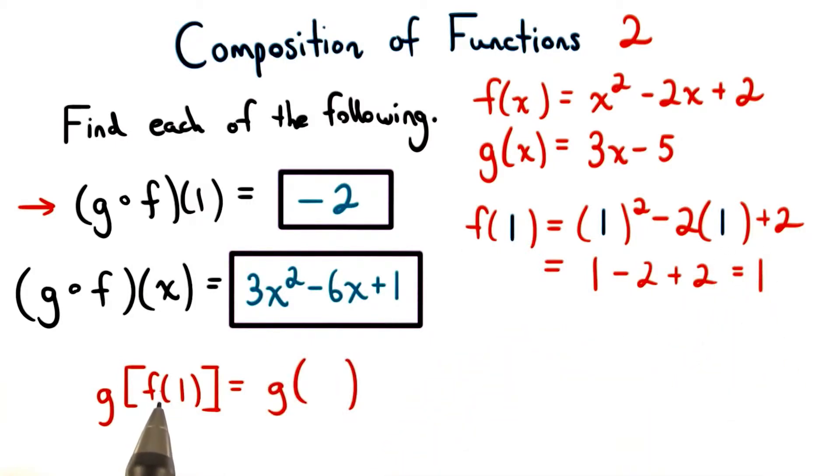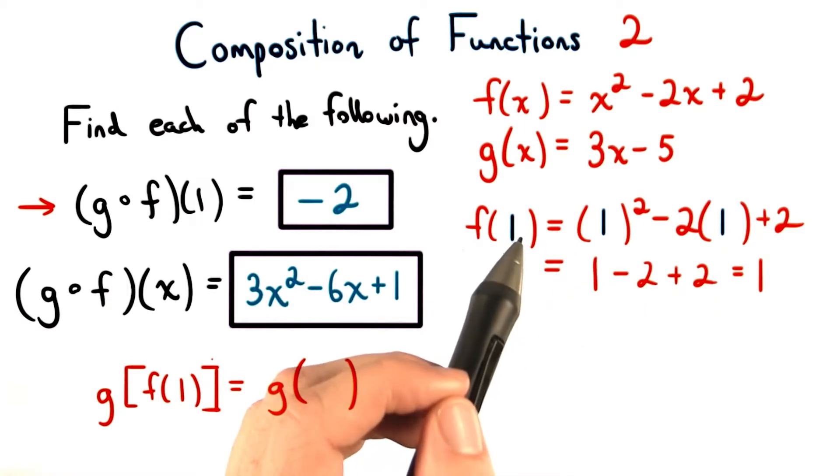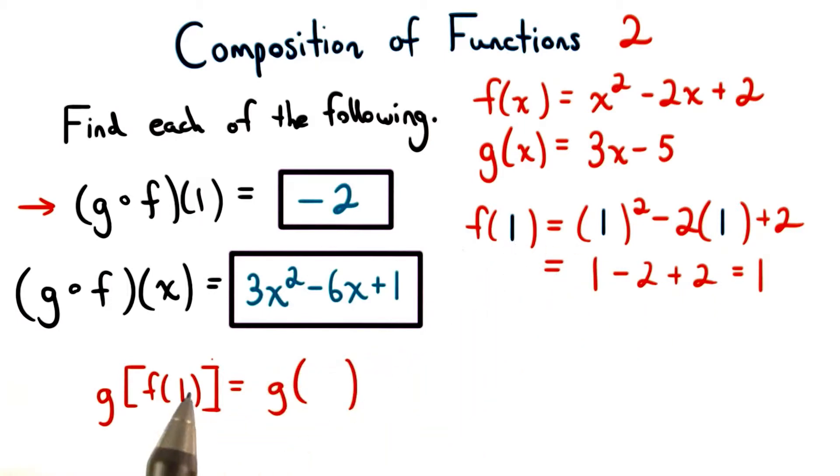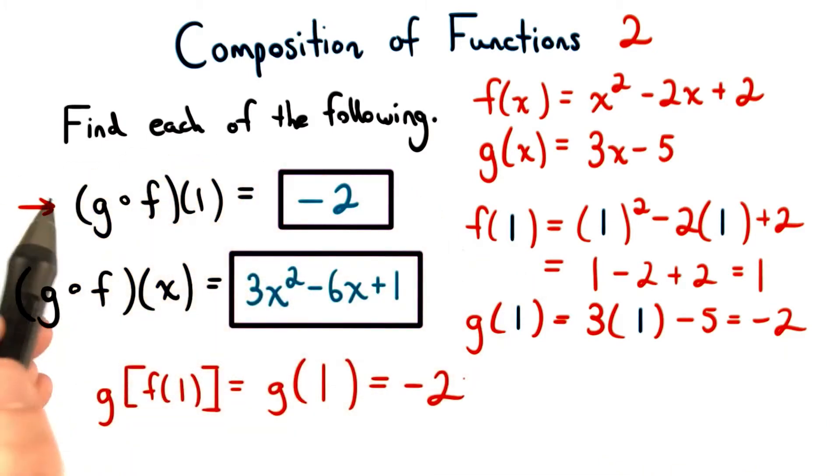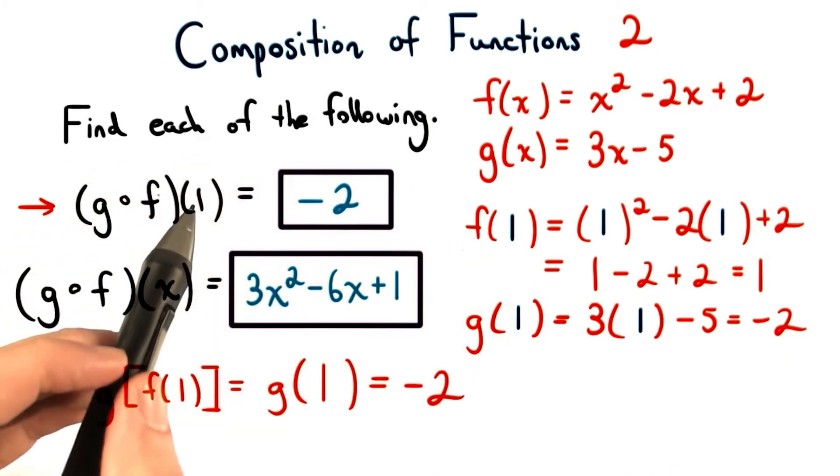So, we know the output is 1 when x equals 1 for f. So, we can replace f of 1 with its value, 1. Now, we just need to find the g of 1. Plugging in 1 for x here, we'll get 3 times 1 minus 5. So, that equals negative 2. This is how we find g of f of 1.